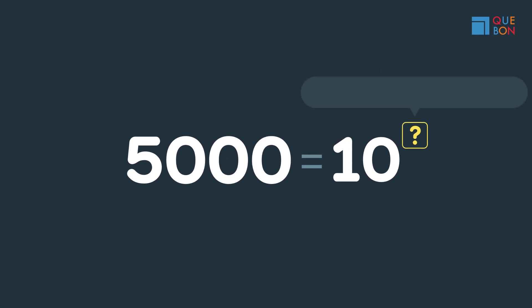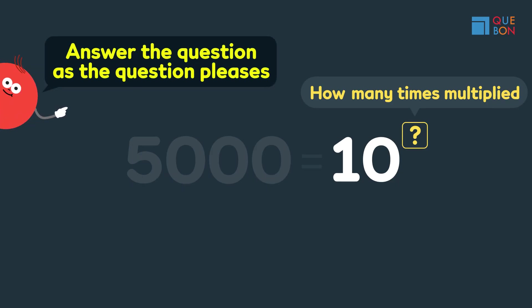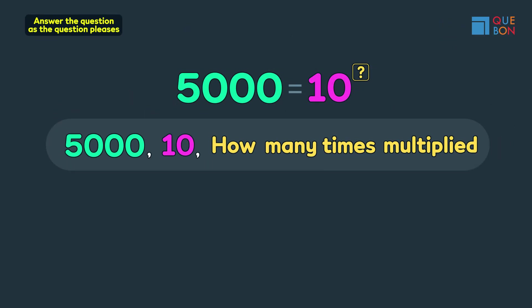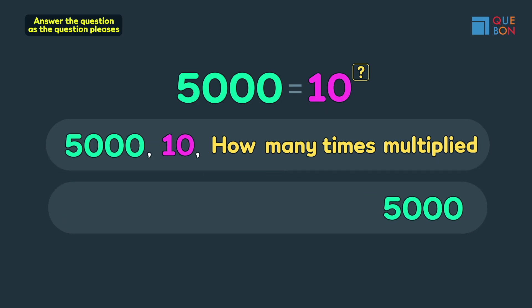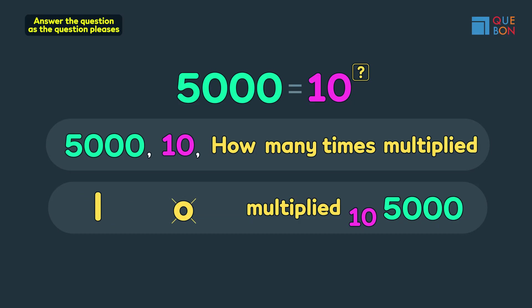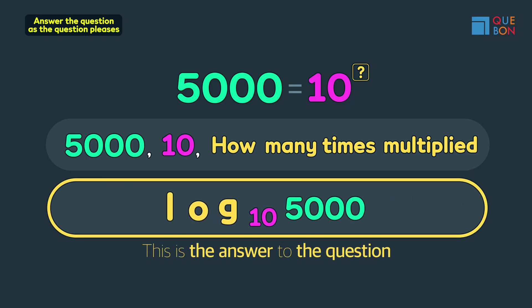Until now, the questions asked how many times a number multiplied by itself becomes another number. You just have to answer the question as the question asks. For example: five thousand is ten multiplied by itself how many times? Just write what they're asking — in other words, log. Log is the answer to that question.